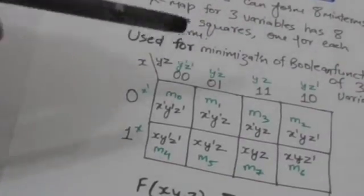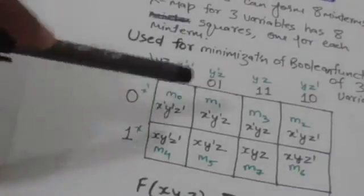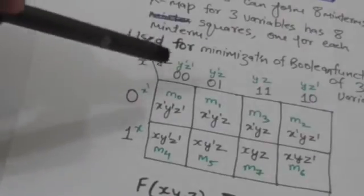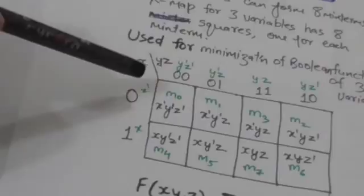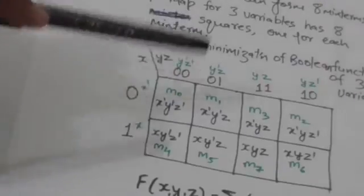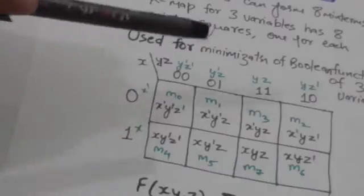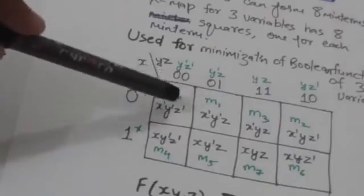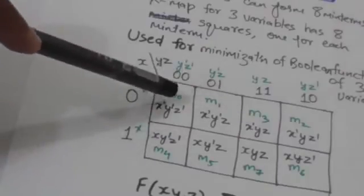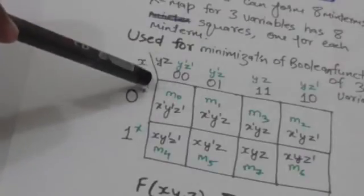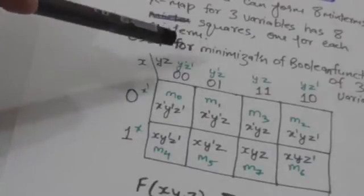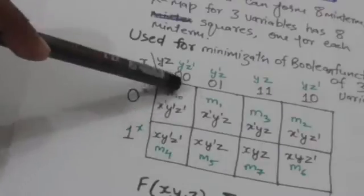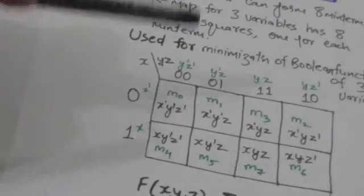The min term corresponding to a square of the K-map can be obtained by concatenating the row label with the column label of that square. For example, look at this square — we concatenate its row label X' with its column label Y'Z', giving us X'Y'Z'. So this square represents the min term X'Y'Z'.